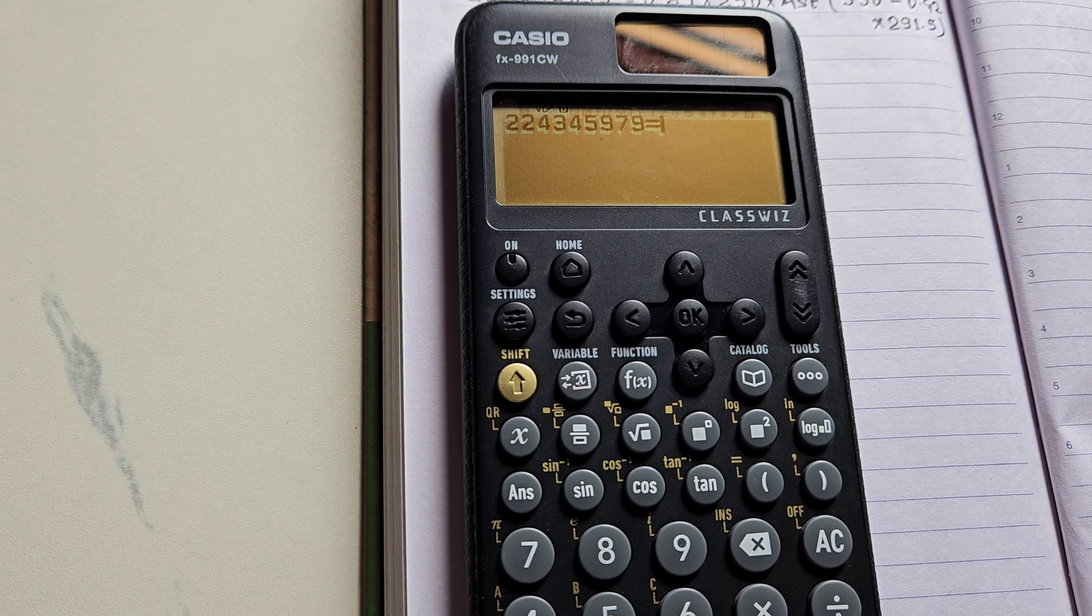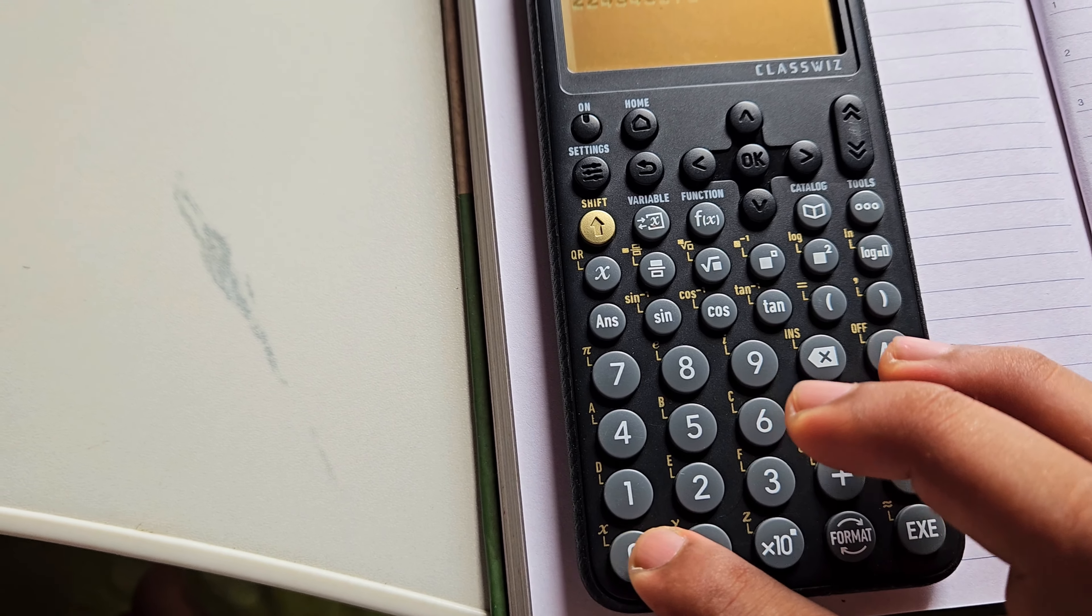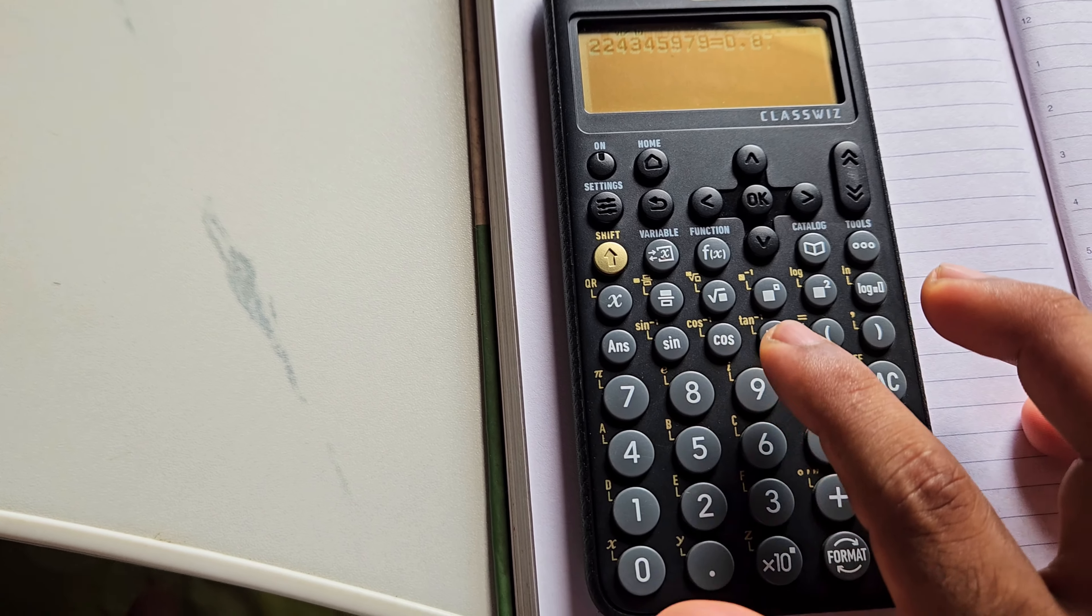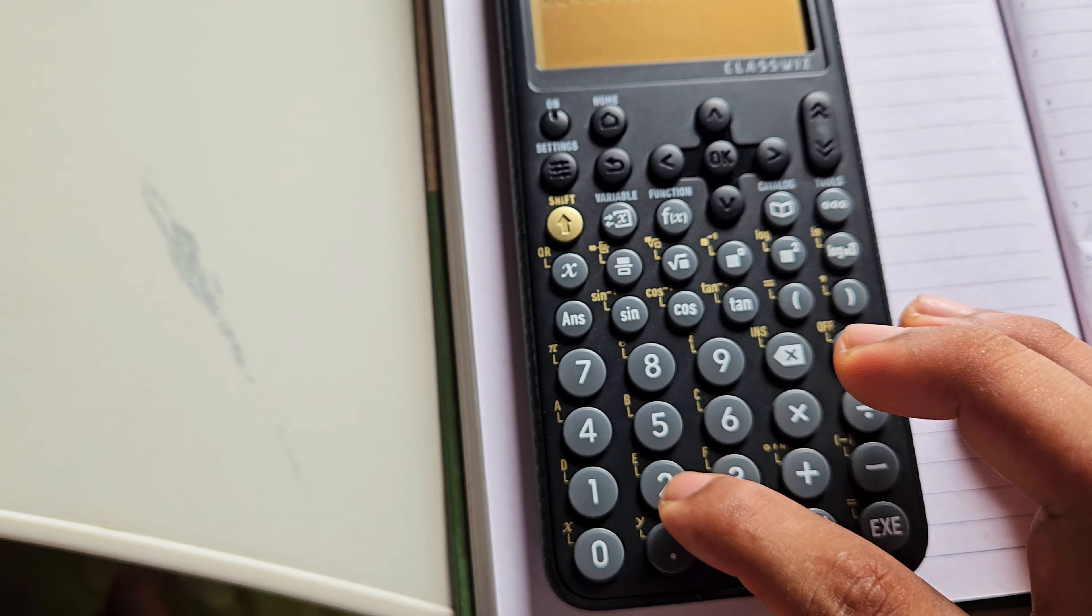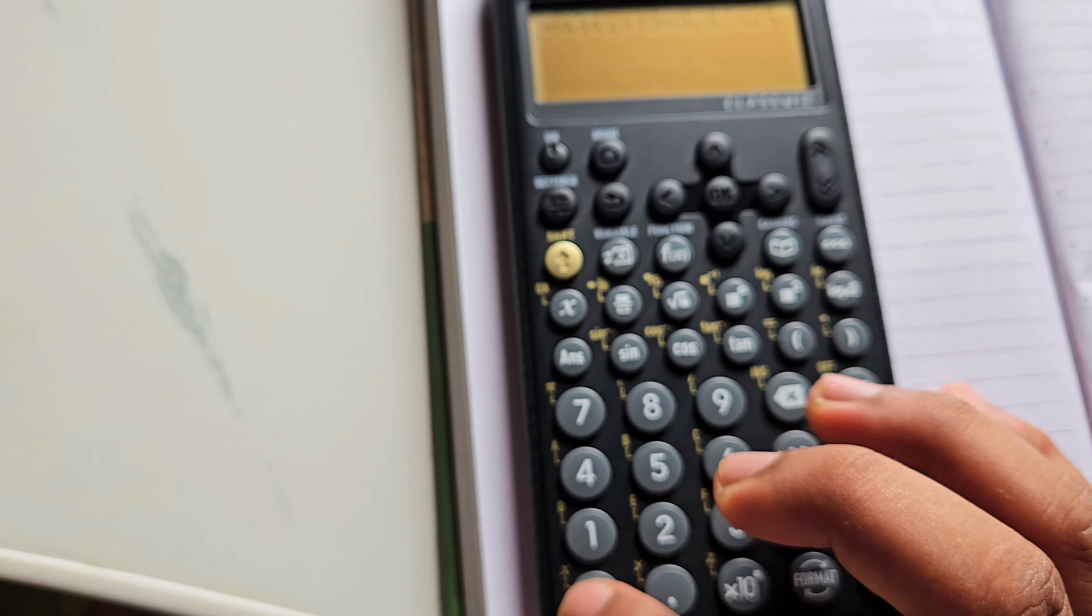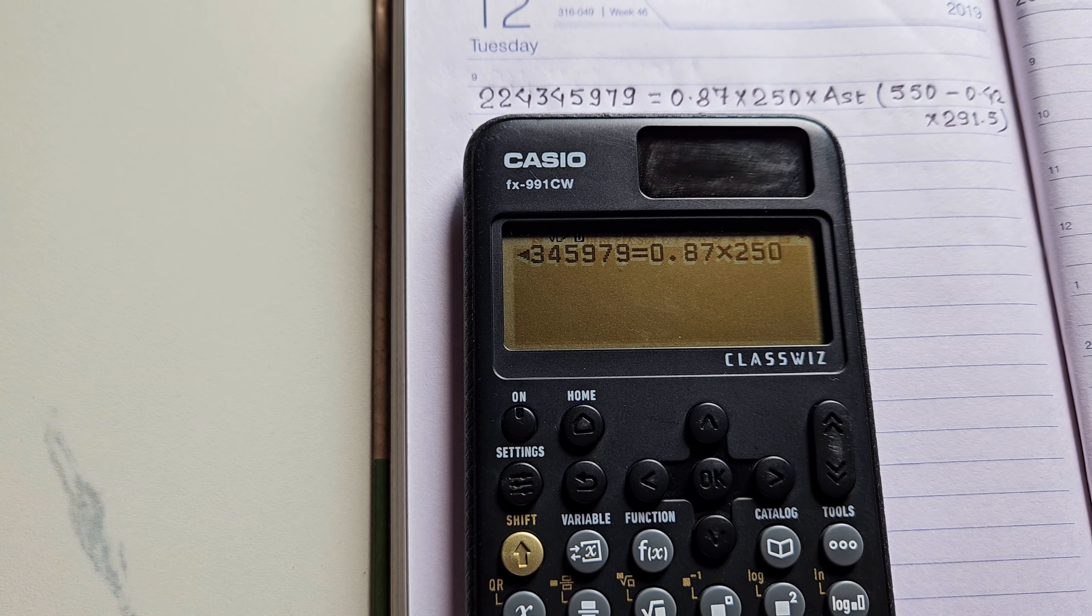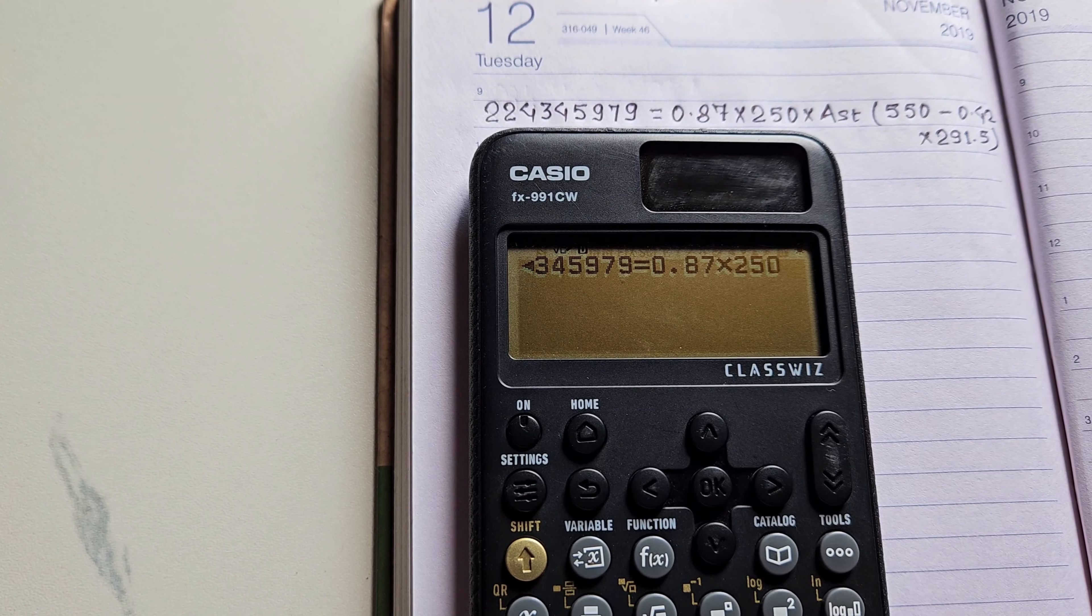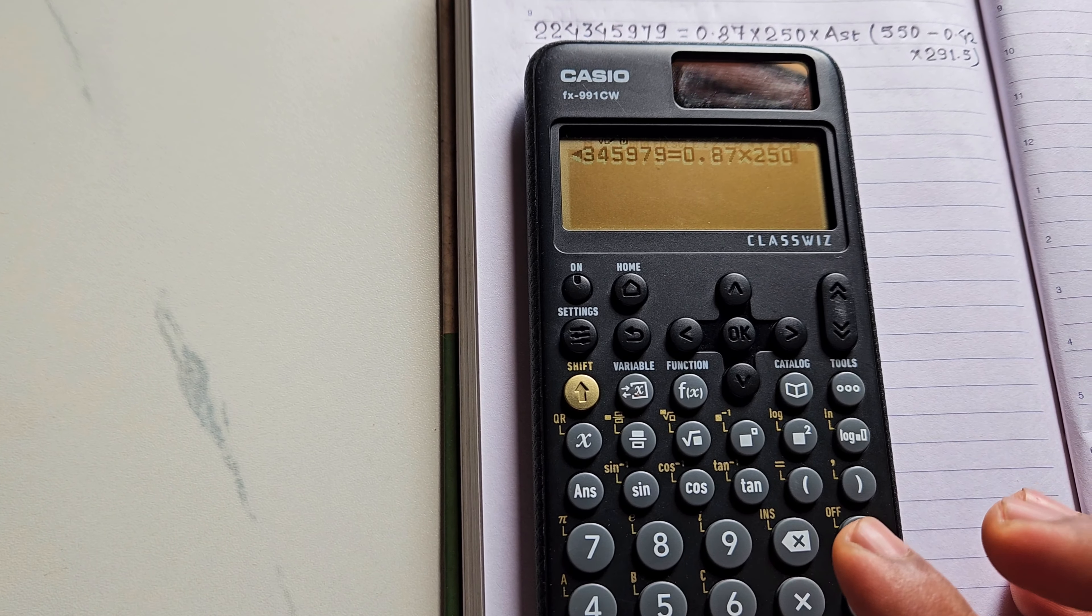And after writing the equal to sign, we have 0.87 × 250. Yes, 250. And then you can see there, AST. AST means any variable we have to find in this particular equation, but you can enter any variable in this calculator.